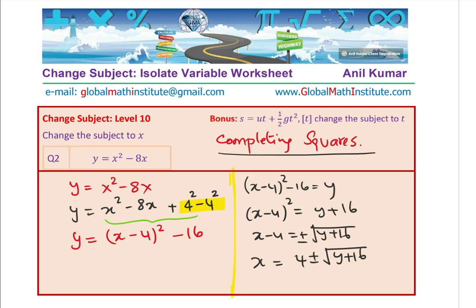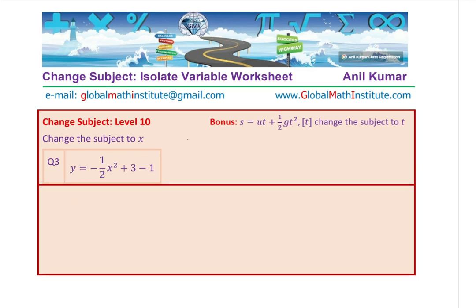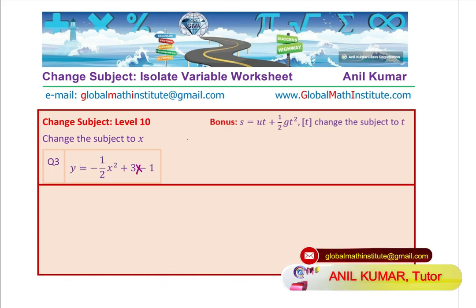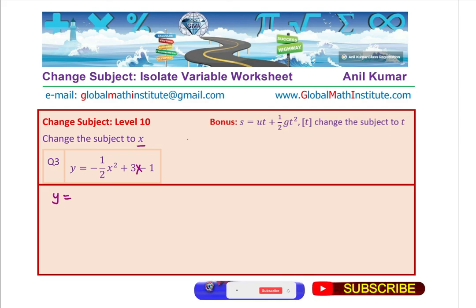Let's now take up the next question which is similar to our bonus question. Do you see that bonus question? s = ut + ½gt², which is a very popular equation in physics which relates acceleration due to gravity, velocity, time, and height, distance. Here we have y = -½x² + 3x - 1. We need to isolate x or change the subject to x. The first step here will be to factor out -½ from the equation. If I factor out, I get x². We are trying to factor -½ from the first two terms. We will keep that -1 separate.